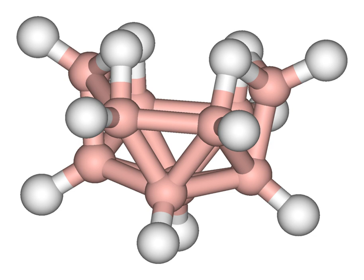Decaborane is the borane with the chemical formula B10H14. This white crystalline compound is one of the principal boron hydride clusters, both as a reference structure and as a precursor to other boron hydrides. It is toxic and volatile, with a foul-smelling odor.